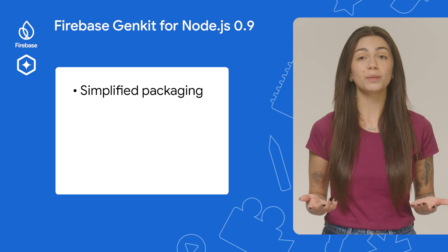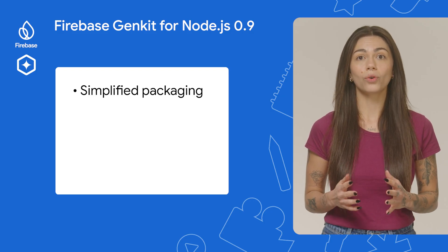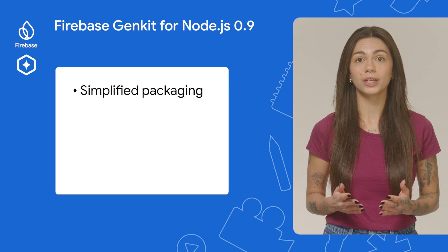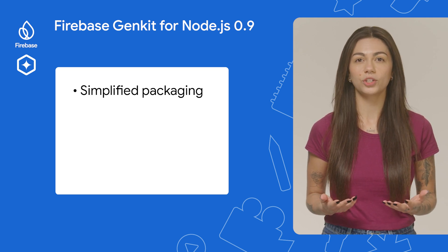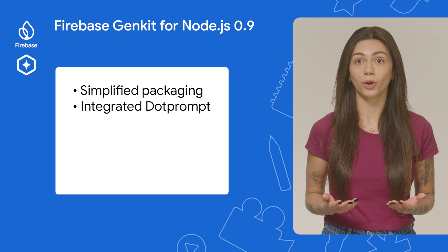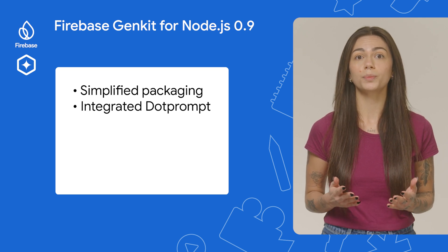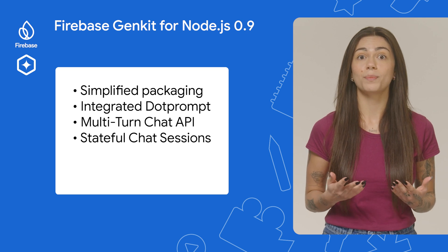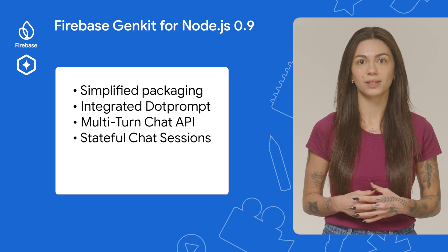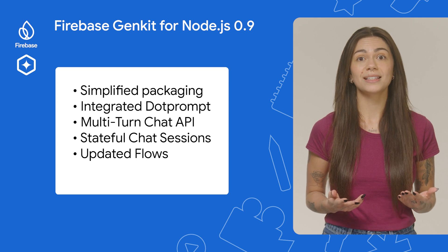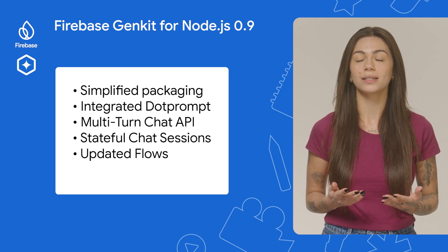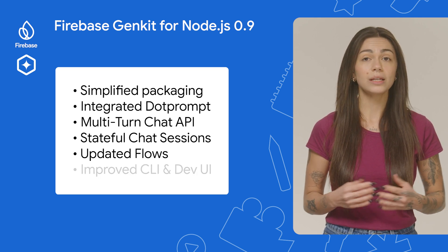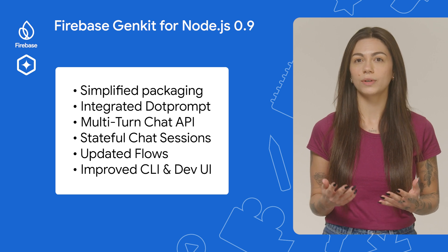This version also comes with some feature enhancements that improve overall functionality. We simplified packaging — all core Genkit functionalities are now in one Genkit package for easier installation and maintenance. We integrated .prompt, so you don't need an extra plugin to write your .prompt files. We have multi-turn chat API and stateful chat sessions. We updated flows, now using an SSE-based streaming protocol and a simpler API. And we improved the CLI and DevUI with a more intuitive UX.